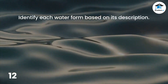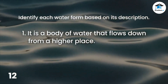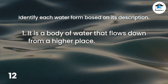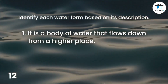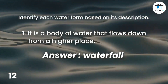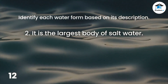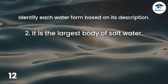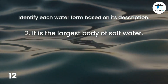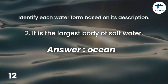Identify each water form based on its description. Number 1: It is a body of water that flows down from a higher place. The answer is waterfall. Number 2: It is the largest body of salt water. The answer is ocean.